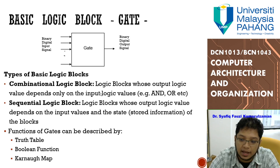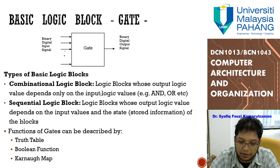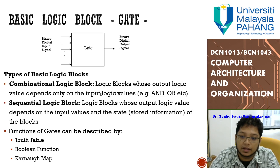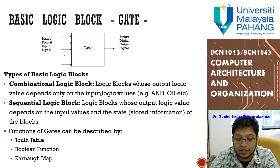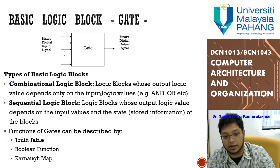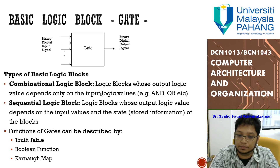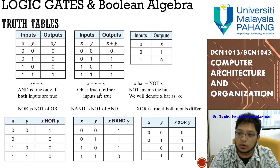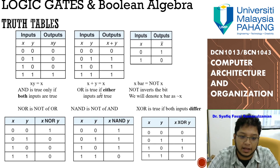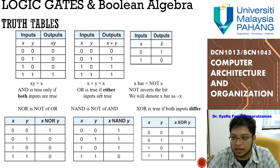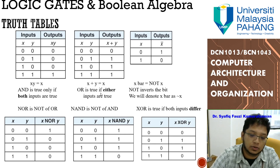The functions of gates can be described through three methods: a truth table, a Boolean function, and a Karnaugh map. This chapter will discuss all of these. We'll start with logic gates and Boolean algebra using the truth table.